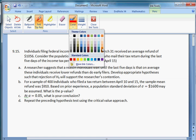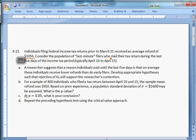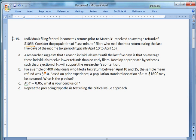I'll read the question and then we'll go through it. Individuals filing federal income tax returns prior to March 31st received an average refund of $1,056. Consider the population of last-minute filers who mail their tax returns during the last five days of the income tax period, typically April 10th to April 15th. Part A, I'll take these in order. A researcher suggests the reason individuals wait until the last five days is that on average these individuals receive lower refunds than early filers. Develop hypotheses such that rejection of the null hypothesis H0 will support the researcher's contention.